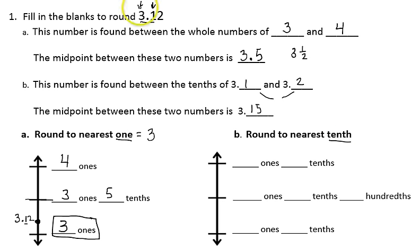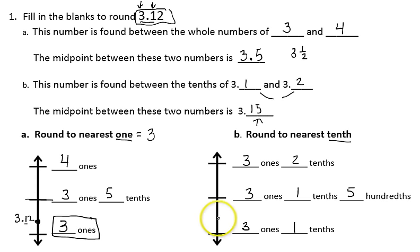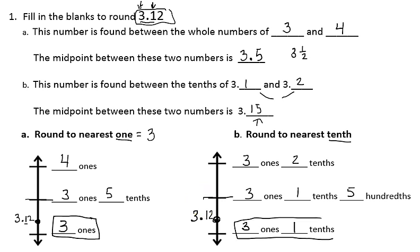Now let's take that same number and round it to the nearest tenth. The original number, 3 and 12 hundredths, falls between 3 ones and 1 tenth and 3 ones and 2 tenths. The midpoint between those two numbers is 3 ones, 1 tenth, and 5 hundredths. Since 3 ones, 1 tenth, and 2 hundredths falls below 3 ones, 1 tenth, and 5 hundredths, it falls below the midpoint. Since it falls below the midpoint, we round down to 3 ones and 1 tenth. So when we round that number to the nearest tenth, it equals 3 and 1 tenth.